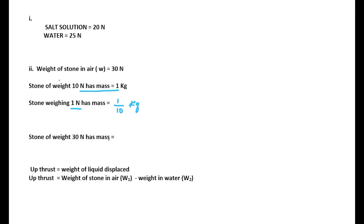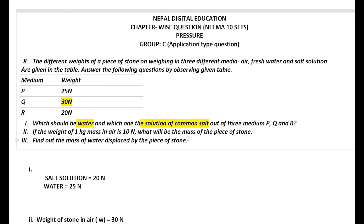Therefore, stone weighing 30 N has mass = (1/10) × 30 = 3 kg. This is the required mass of the piece of stone.